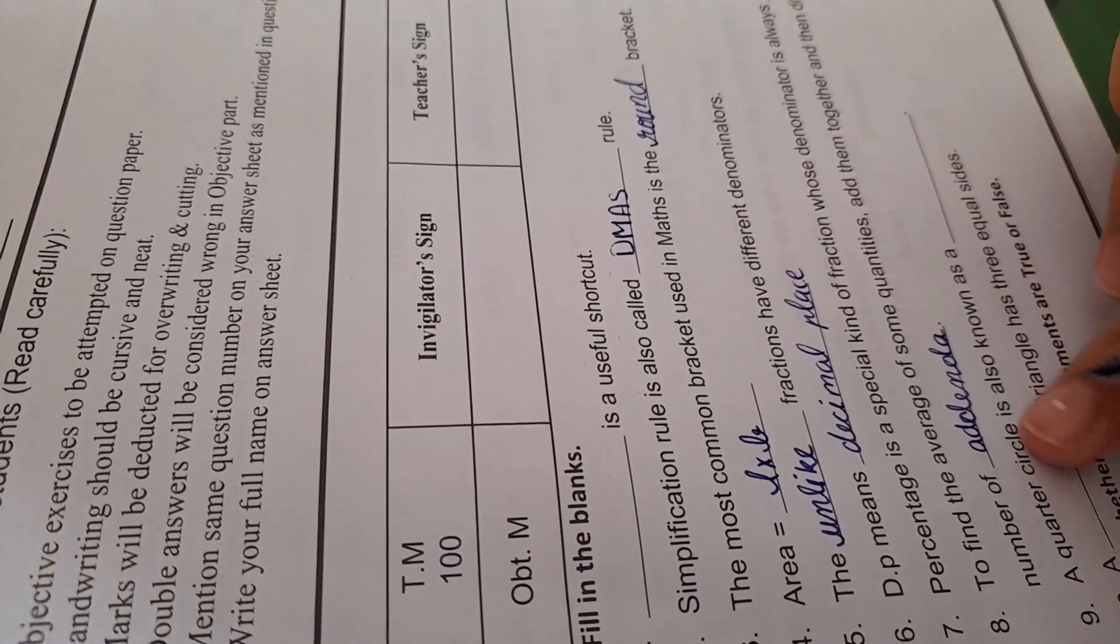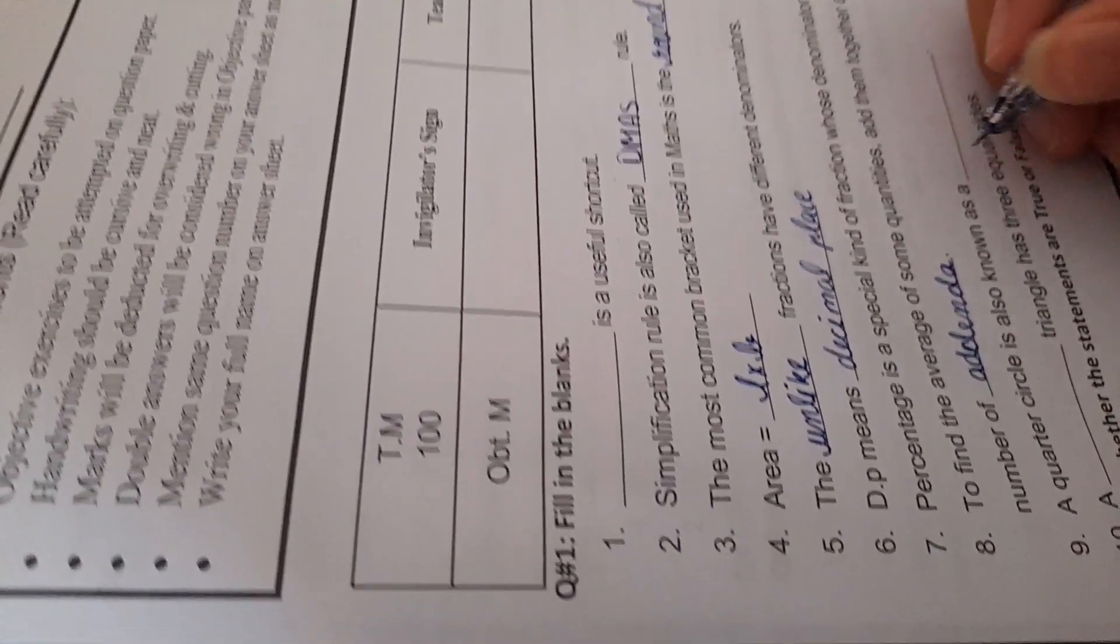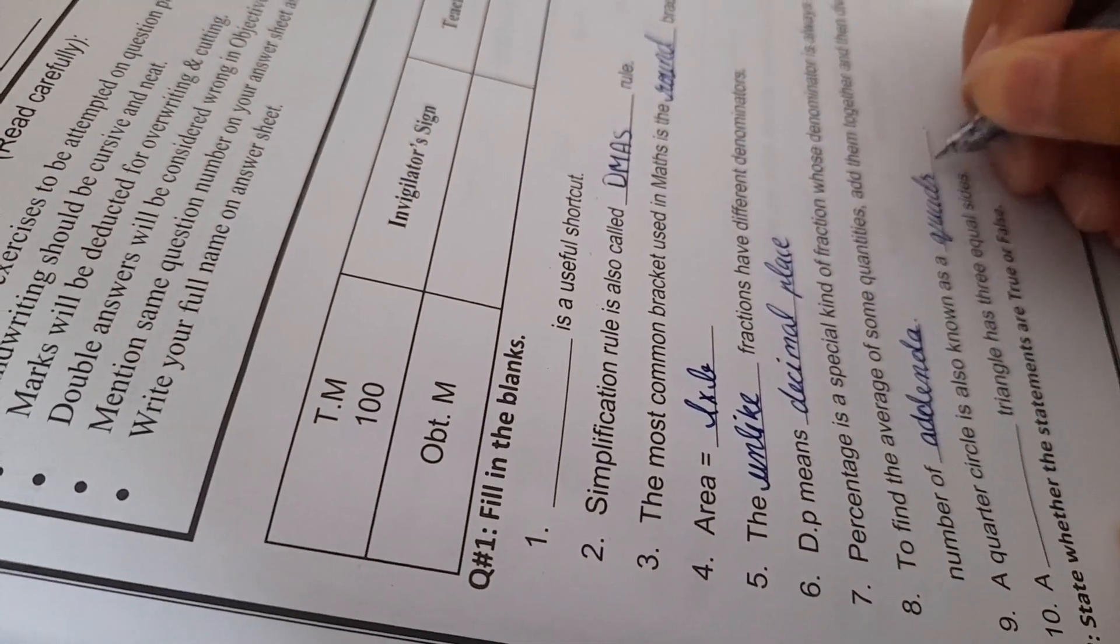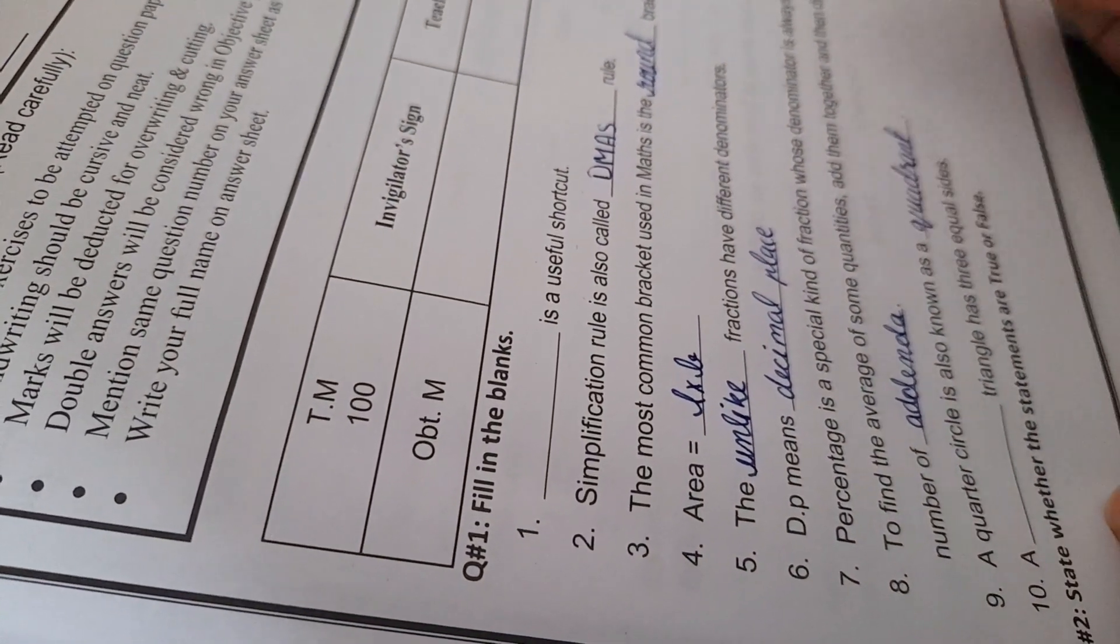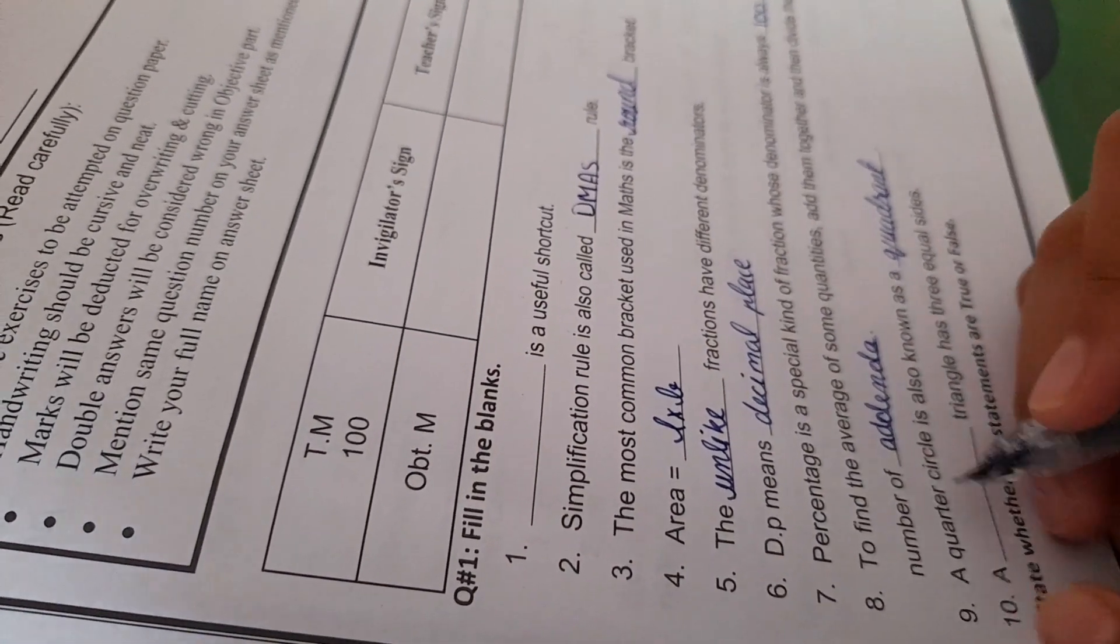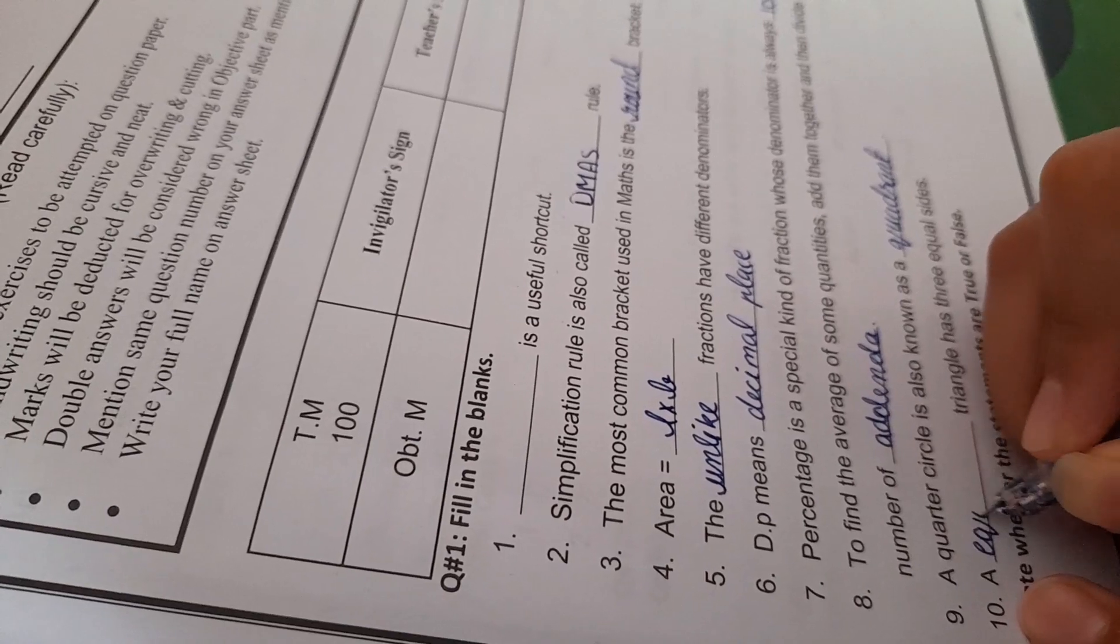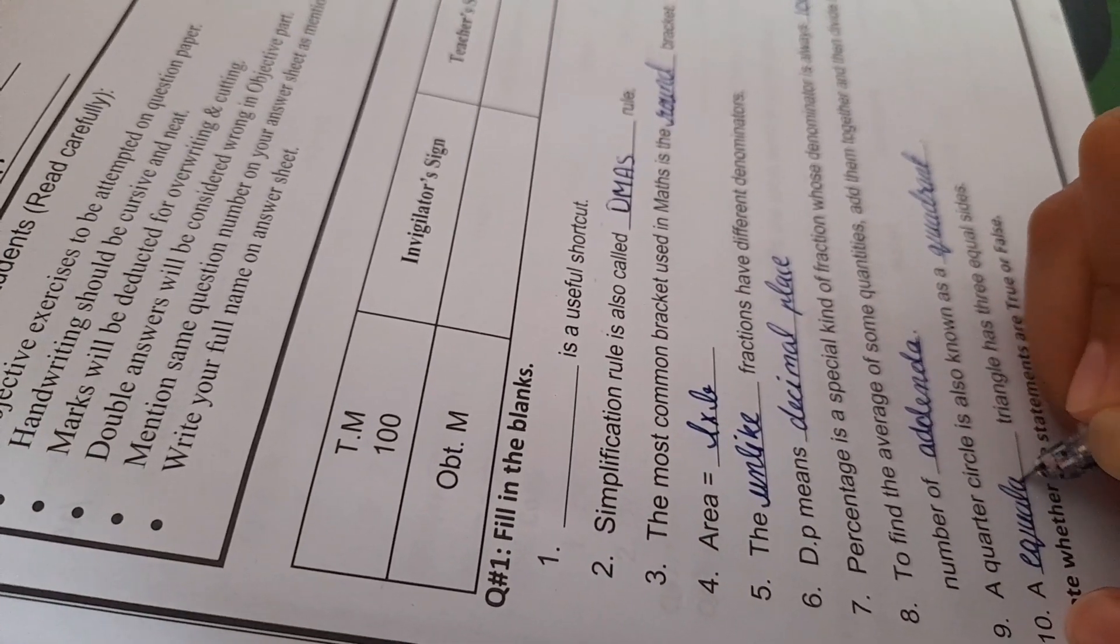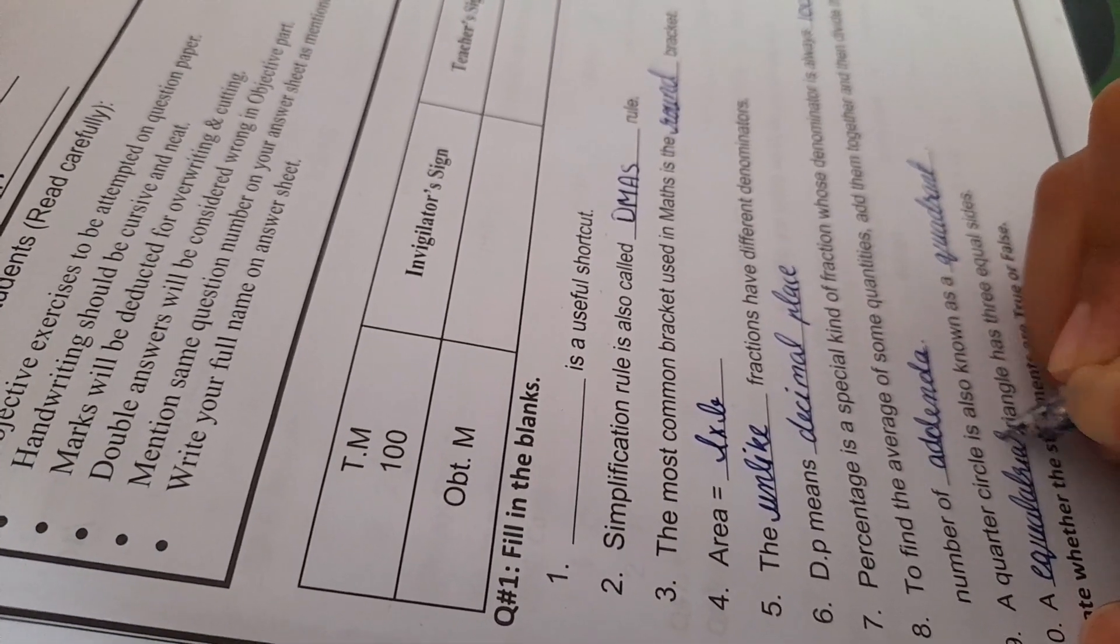A quarter circle is known as a quadrant. A dash triangle has three equal sides. Equilateral.